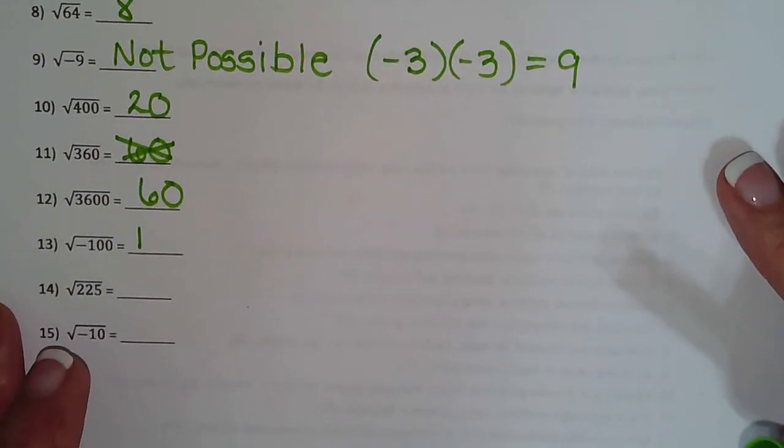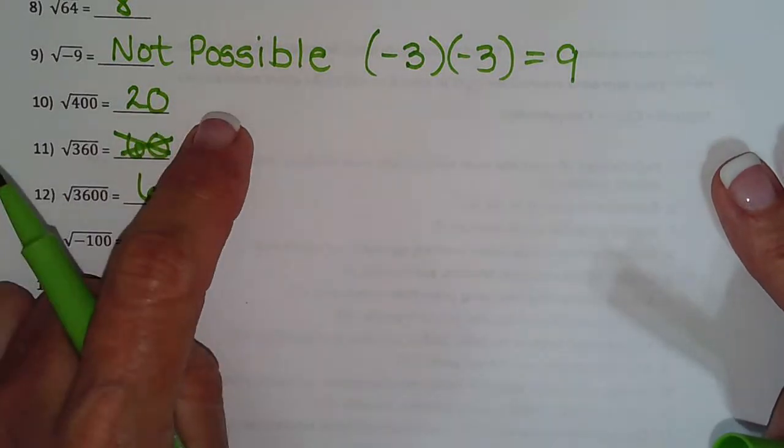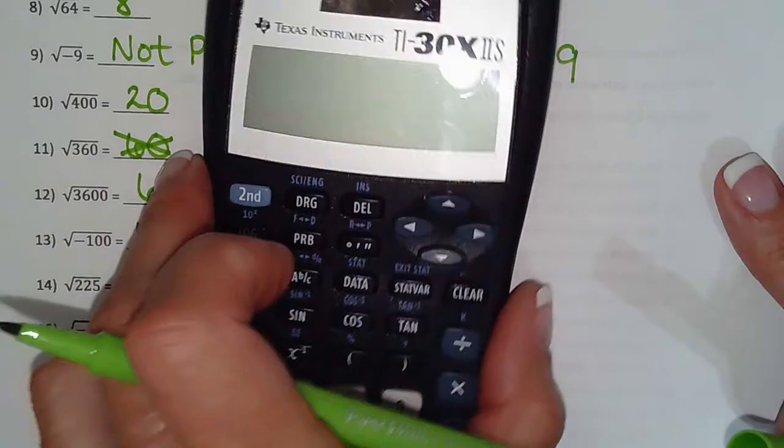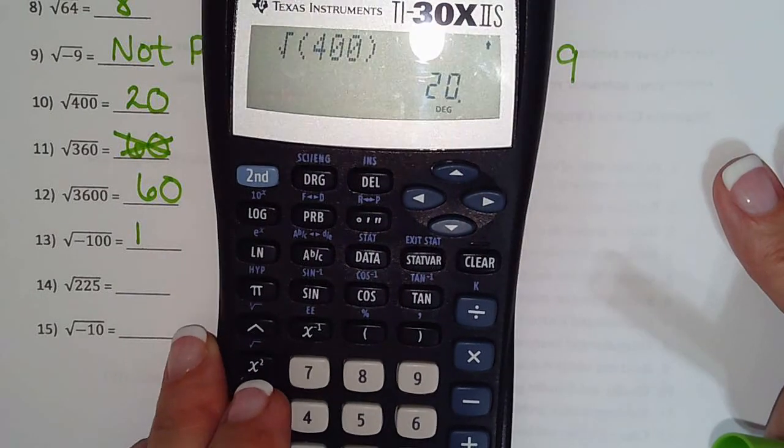And then square root of 400. 2 times 2 is 4 and then add 2 zeros. That's 20. You can see that right here. I typed it in the calculator to verify.